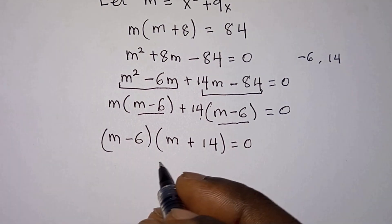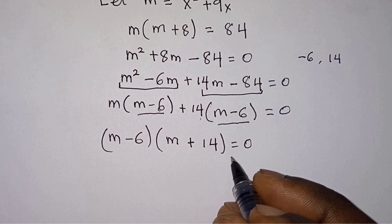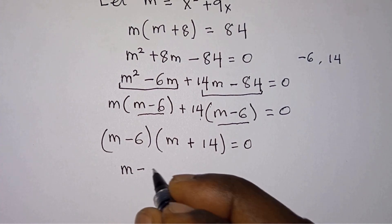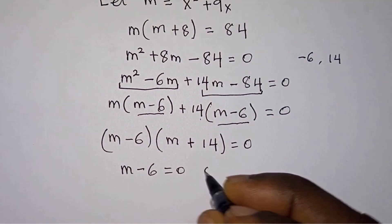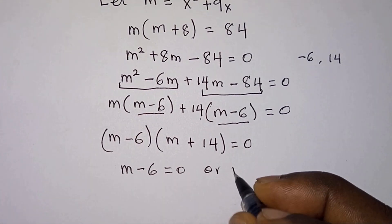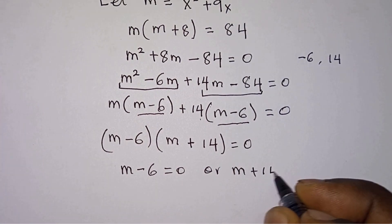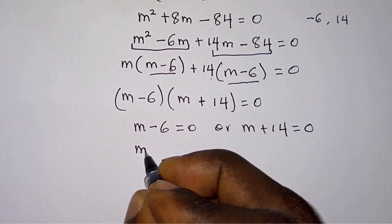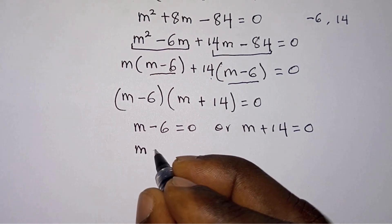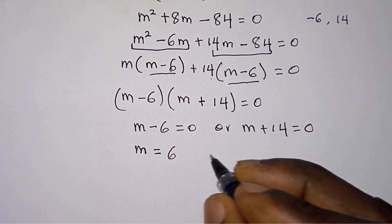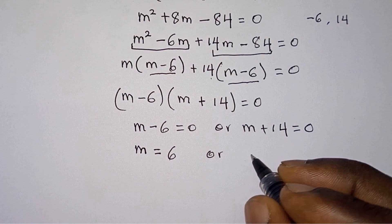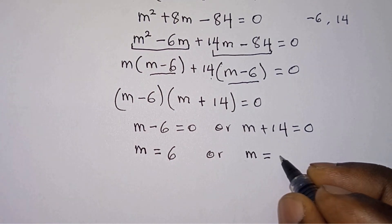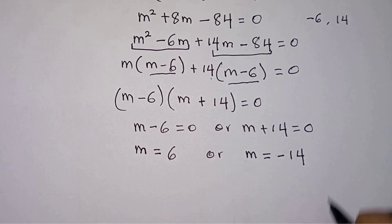The product of two factors equals zero, so either m minus 6 equals zero or m plus 14 equals zero. Adding 6 to the first equation gives m equals 6, or subtracting 14 from the second gives m equals negative 14.